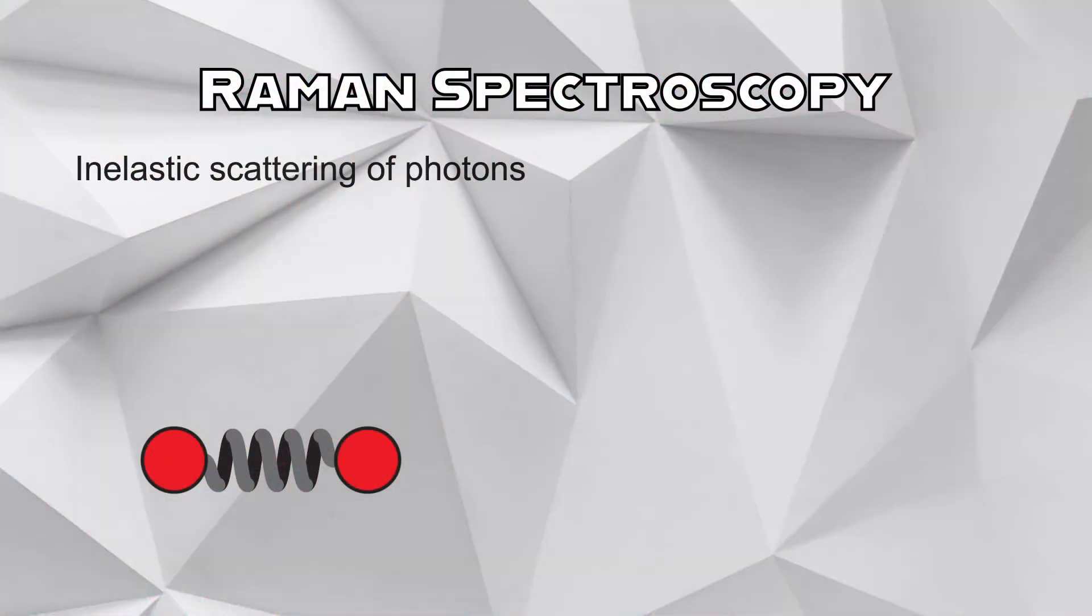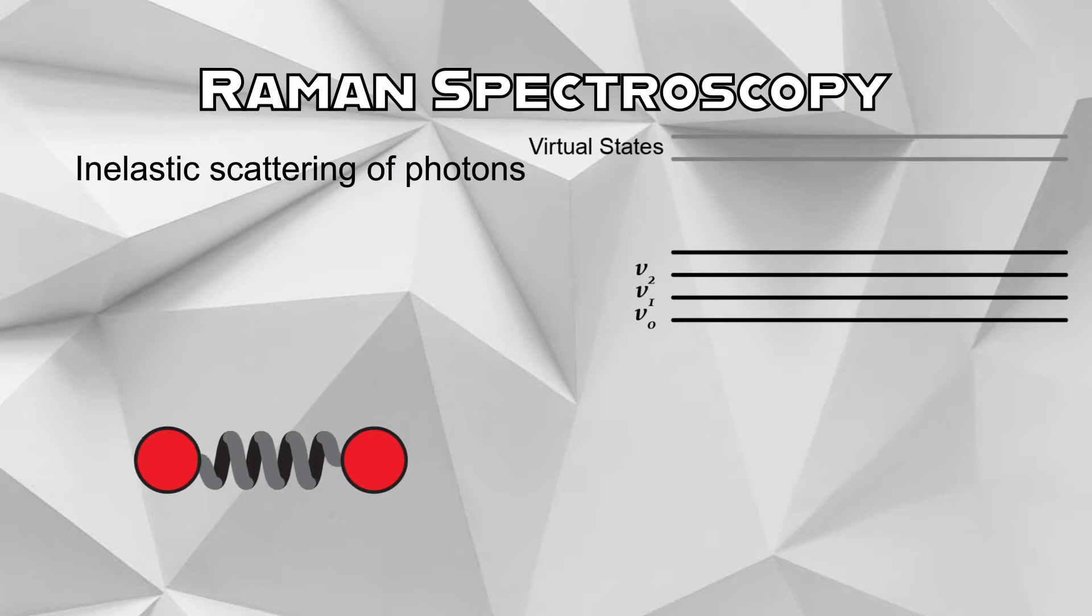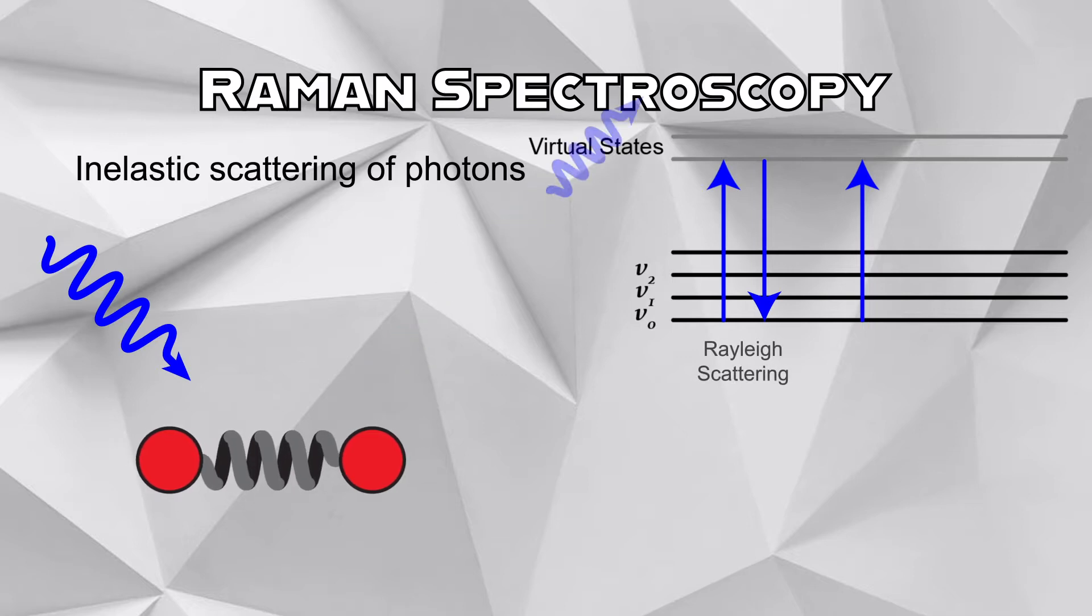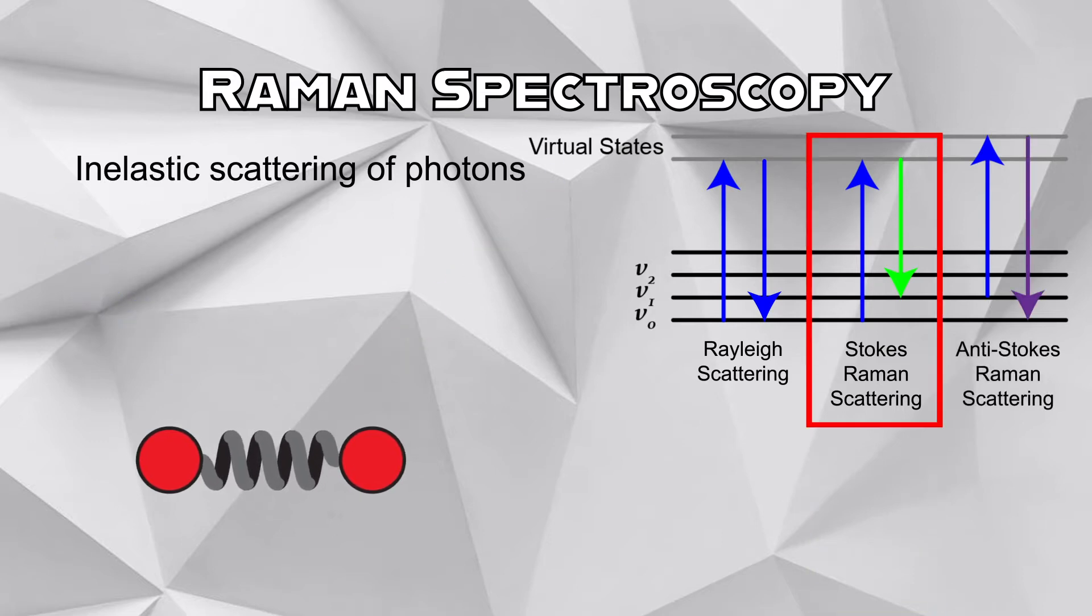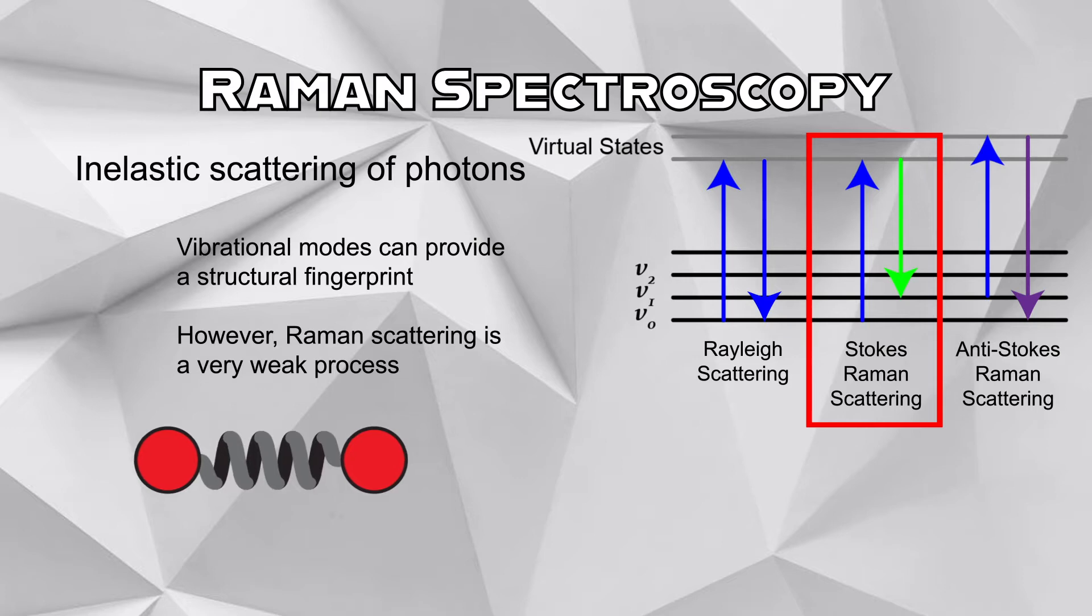Raman spectroscopy relies upon the inelastic scattering of light by matter. Most commonly, Rayleigh scattering occurs, where the incident and emitted photon have the same energy. However, in a rare process, the emitted photon can have lower energy, as the molecule gains vibrational energy, which is known as Stokes-Raman scattering. A Raman spectrum that results from Stokes-Raman scattering can provide a highly sensitive vibrational fingerprint of a molecule's or material structure.